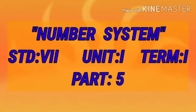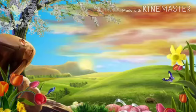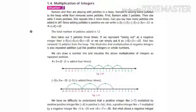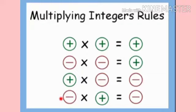Number system is the first unit of this term. In the last class we have seen about multiplication of integers. Under that topic we discussed how integers are represented on the number line under multiplication, and the rules: plus into plus is equal to plus, minus into minus is equal to plus, plus into minus is equal to minus, and minus into plus is equal to minus.